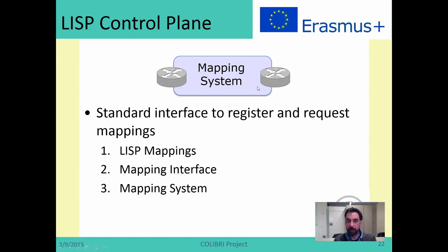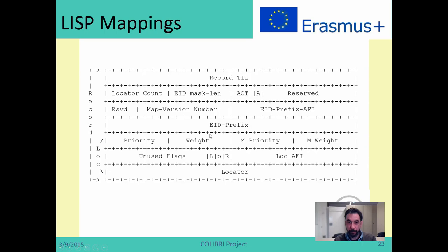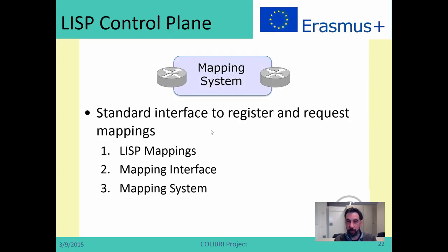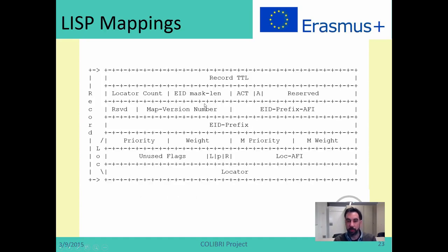What about the control plane — the mapping system? The mapping system is a database that stores records, supporting these EID-to-locator mappings. I'm going to explain how these mappings work, then which is the interface to the mapping system, and finally briefly how the mapping system works. This is actually a LISP mapping — the message that contains EID-to-RLOG mappings. The most important field is the TTL, so that this mapping can only be used for a certain amount of time; otherwise it has to be expired.